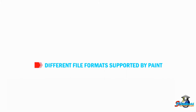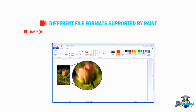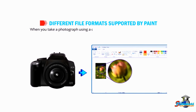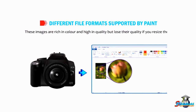Let us talk about different file formats supported by Paint. The Paint program opens and saves a file in the following formats. BMP (Bitmap): The bitmap, also known as bitmap image file, is large in size and cannot be compressed. When you take a photograph using a digital camera or scan an image from paper, a bitmap image file is created. These images are rich in color and high in quality but lose their quality if you resize them.